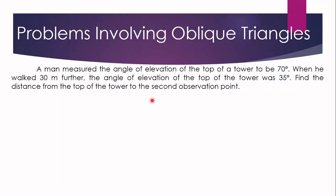A man measured the angle of elevation of the top of a tower to be 70 degrees. When he walked 30 meters further, the angle of elevation of the top of the tower is 35 degrees. Find the distance from the top of the tower to the second observation point. So we have two observation points: the first where the angle of elevation is 70 degrees, and after walking 30 meters farther, it becomes 35 degrees.